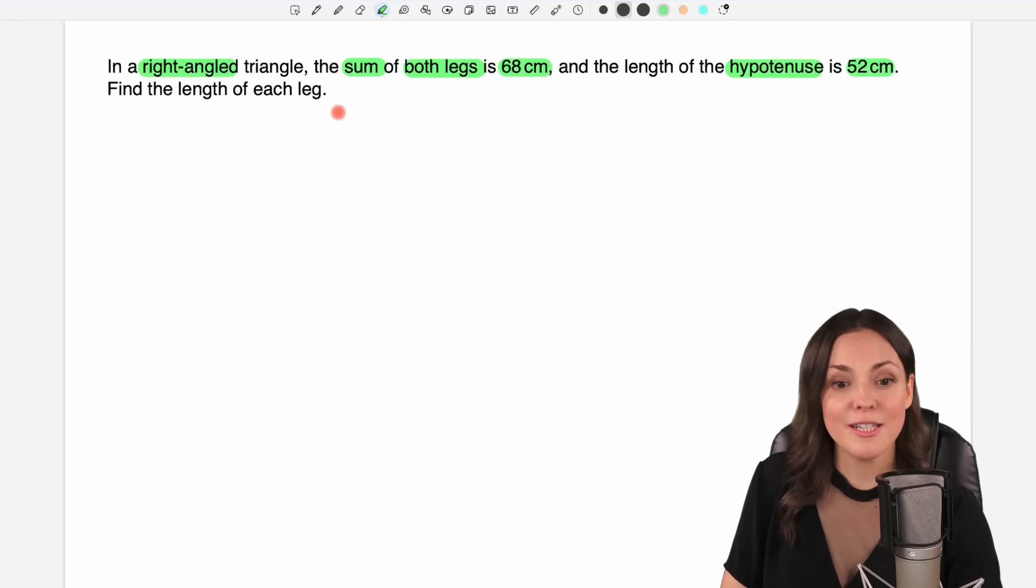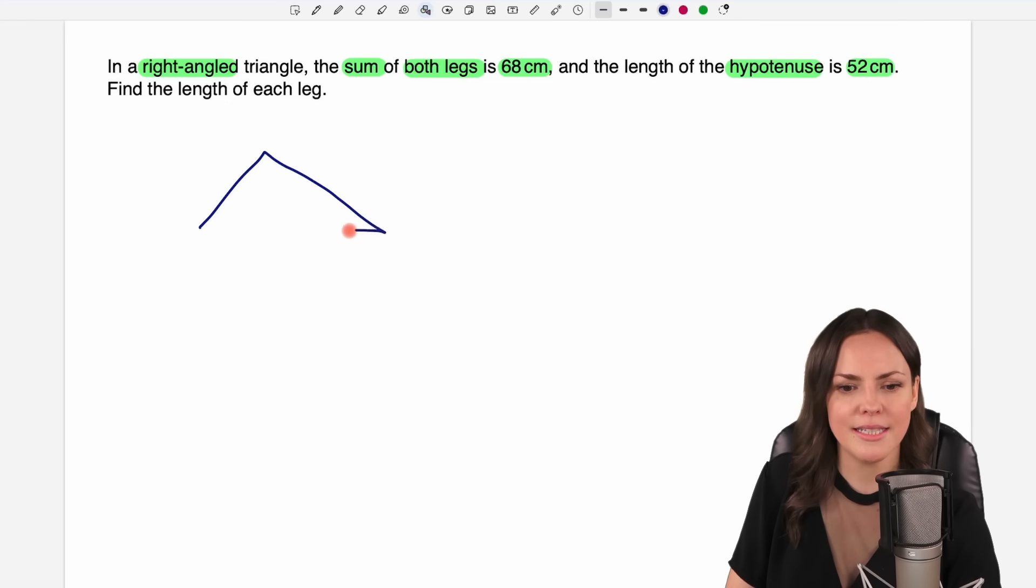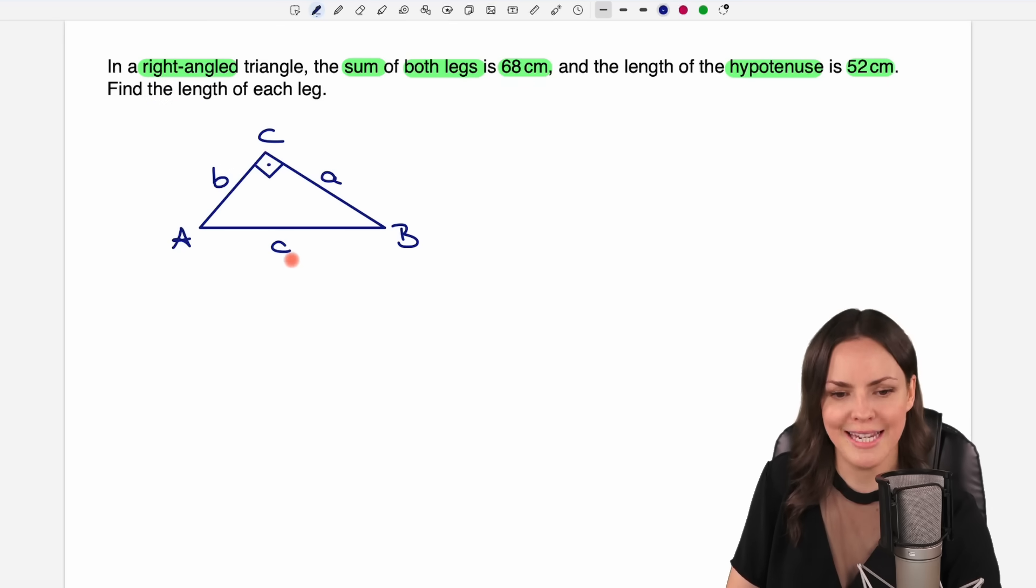Okay, so this is about a triangle, a right angled triangle. So let's draw one so that we know what we're working here with. This is my right triangle with my right angle here. I call the corners A, B and C so that I have the sides A across A, B across B and C across C.